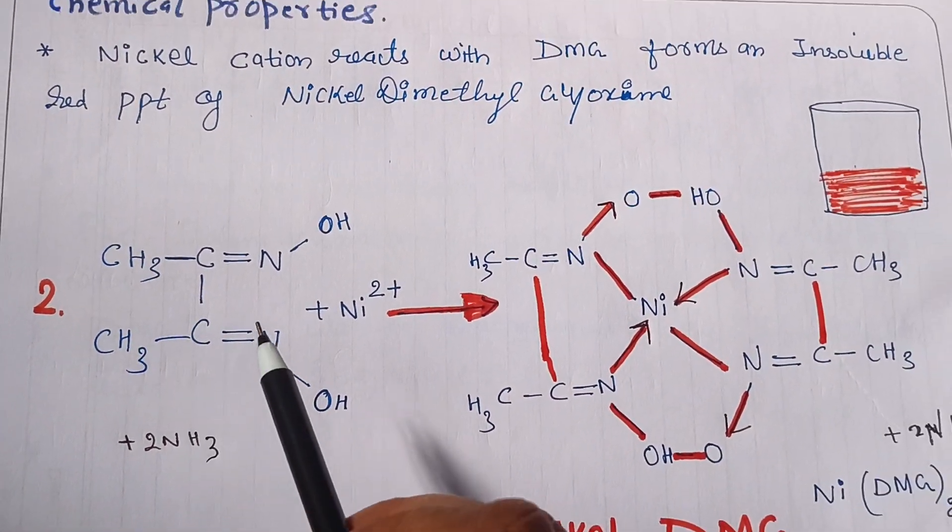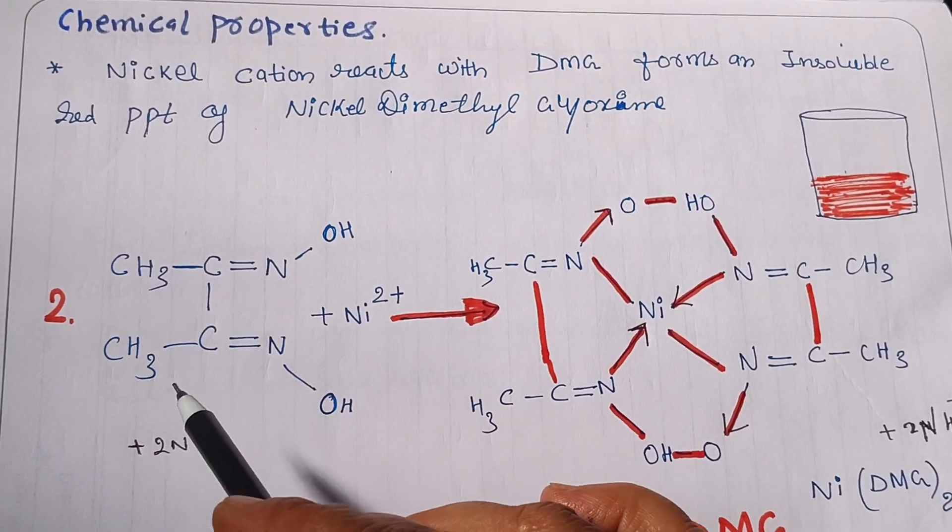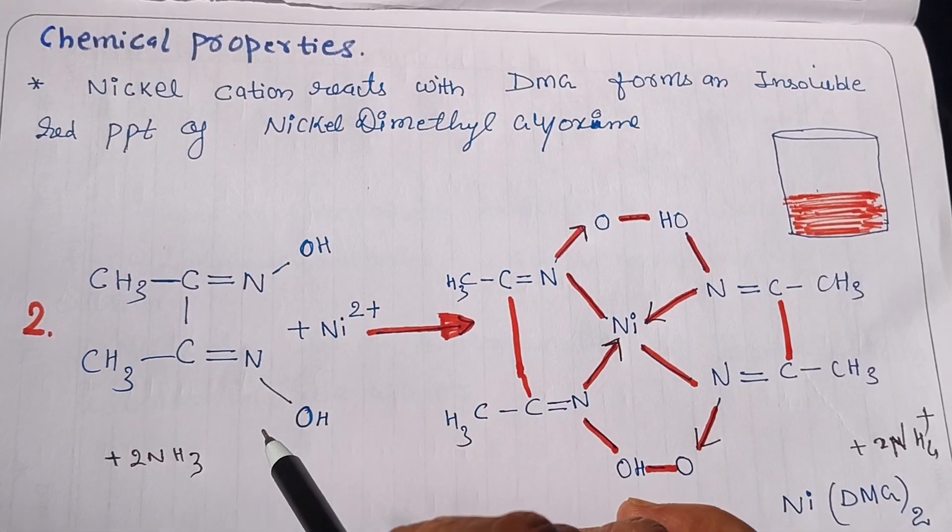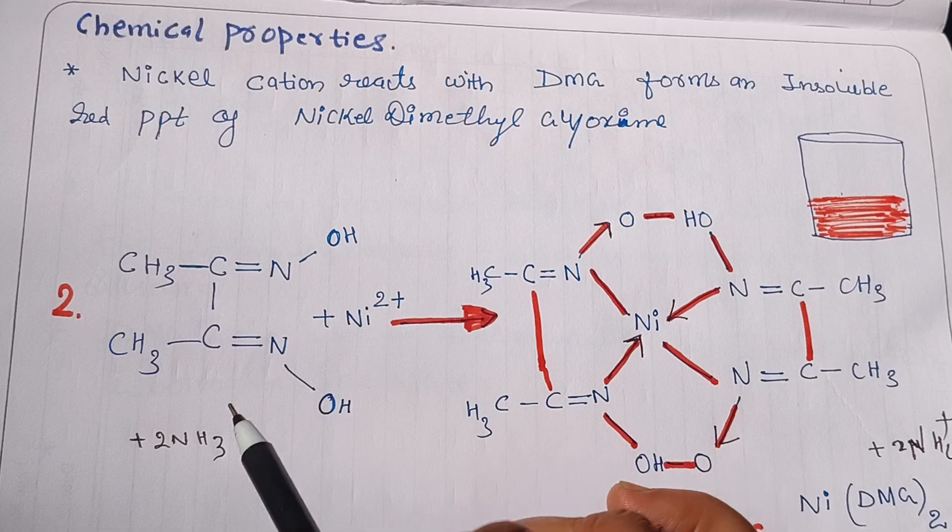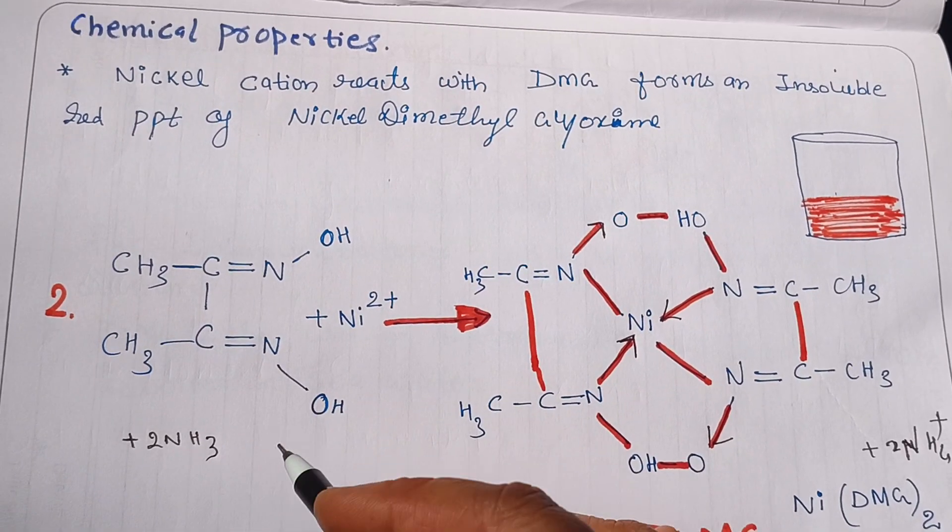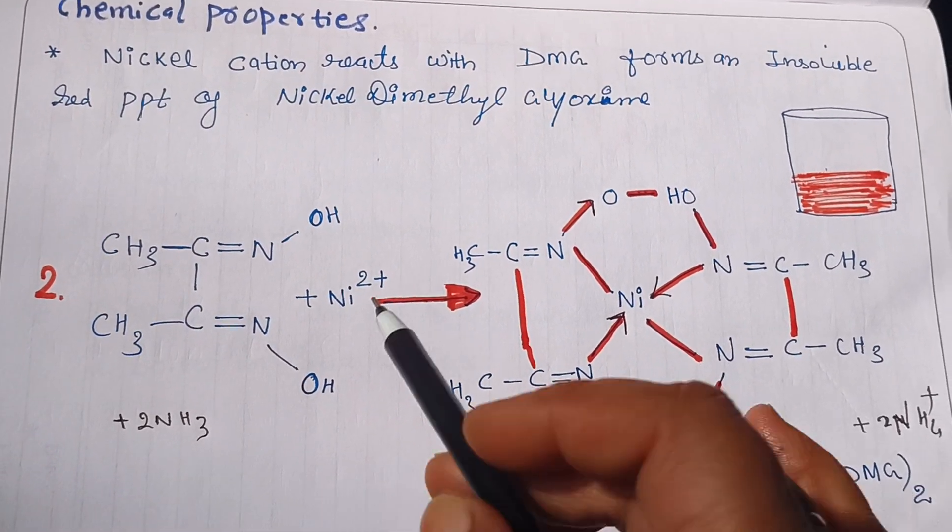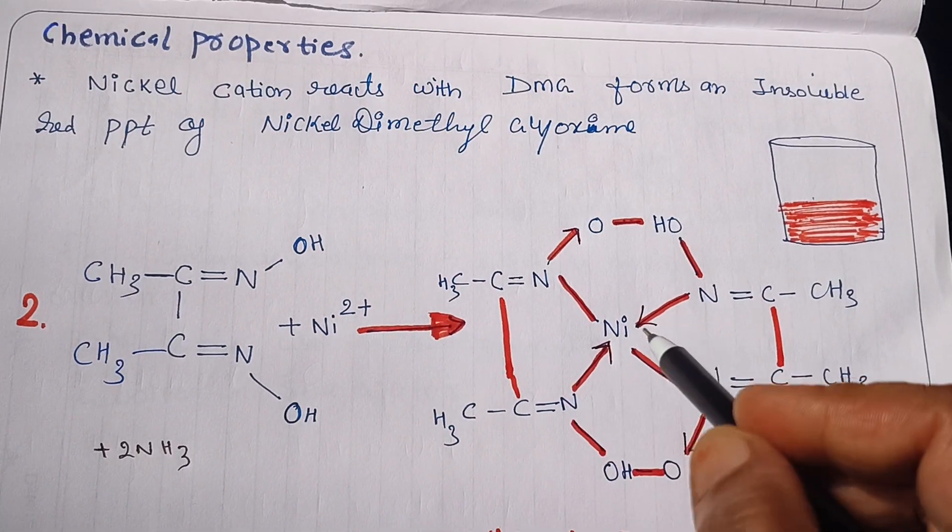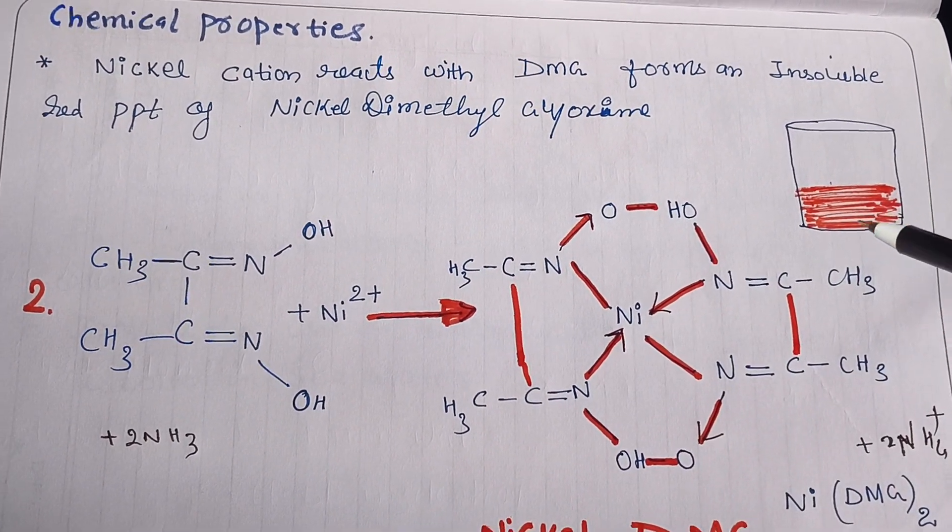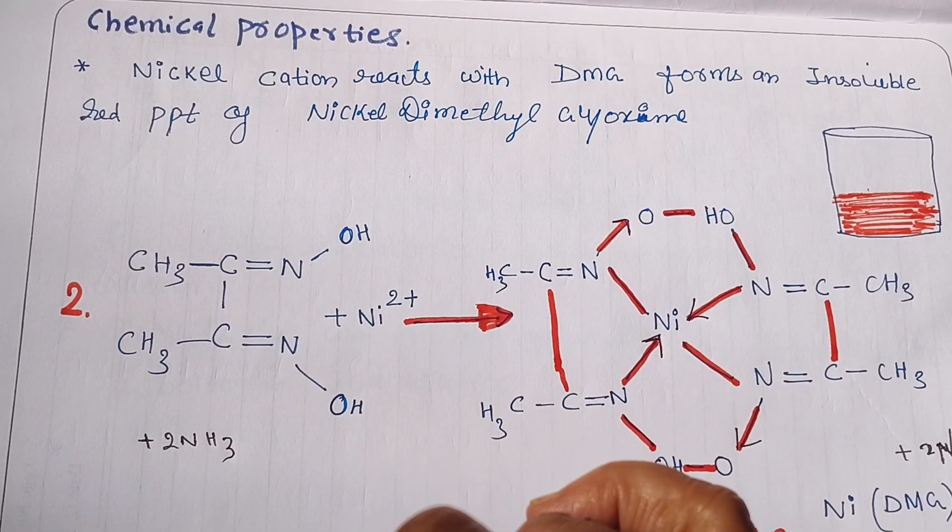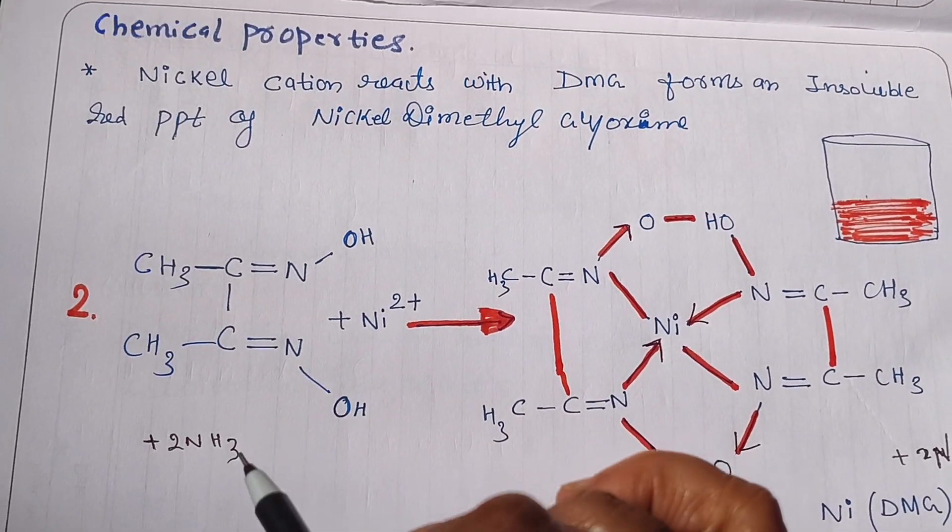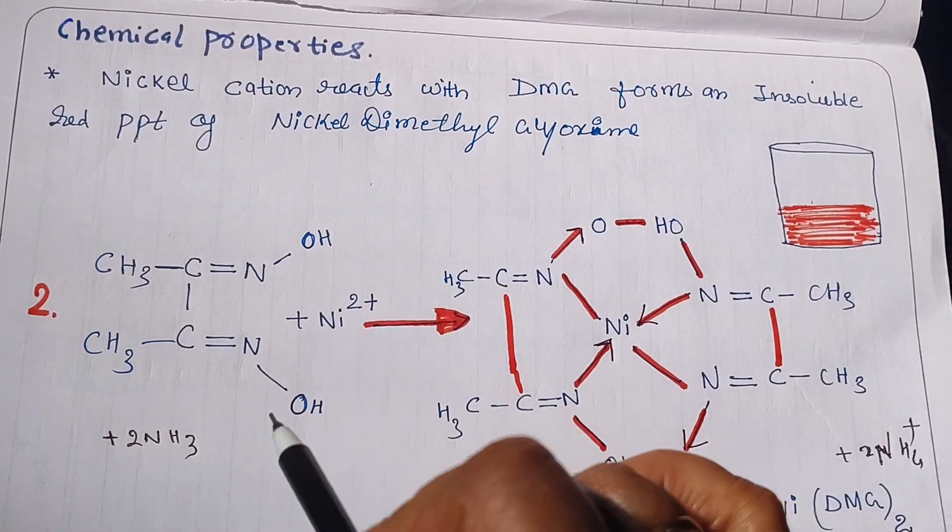When combining nickel with dimethyl glyoxime, this structure can also be written this way. When adding dimethyl glyoxime to any nickel salt in the presence of ammonia, it will form a complex structure. You will see a reddish color as we add dimethyl glyoxime in the nickel salt solution. In the presence of ammonia, we get a pinkish precipitate of nickel dimethyl glyoxime complex.